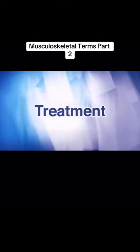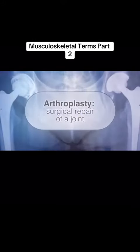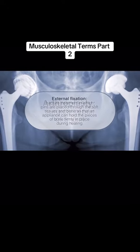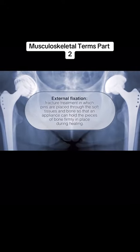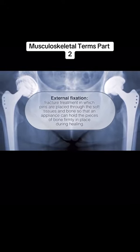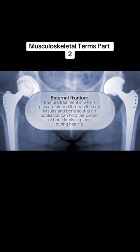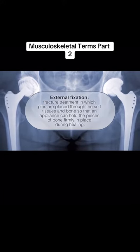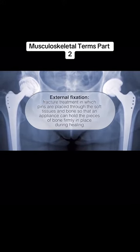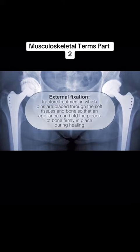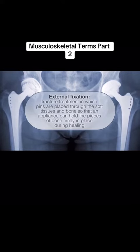Treatment. Arthroplasty: surgical repair of a joint. External fixation: fracture treatment in which pins are placed through the soft tissues and bone so that an appliance can hold the pieces of bone firmly in place during healing.